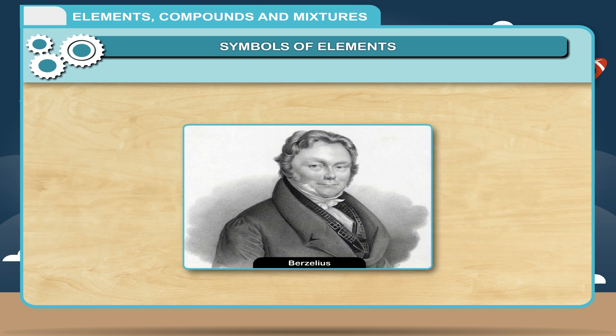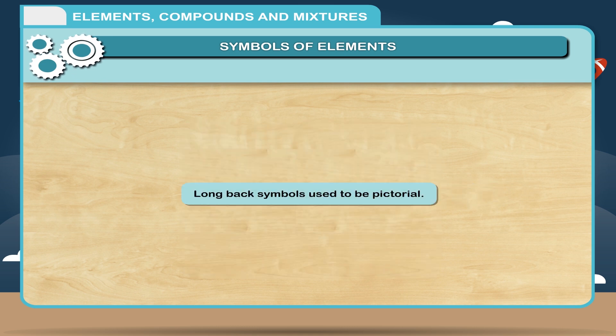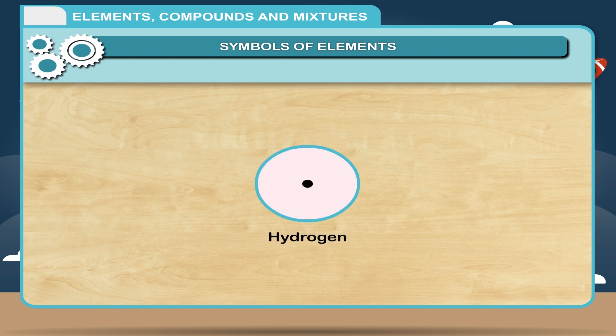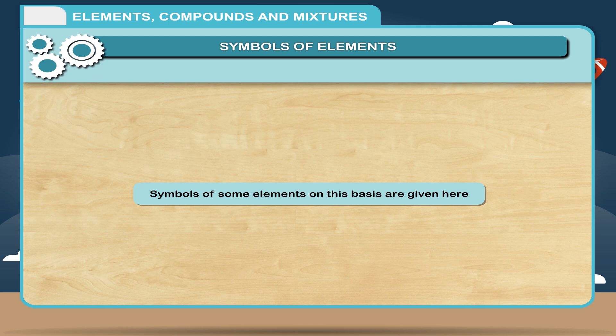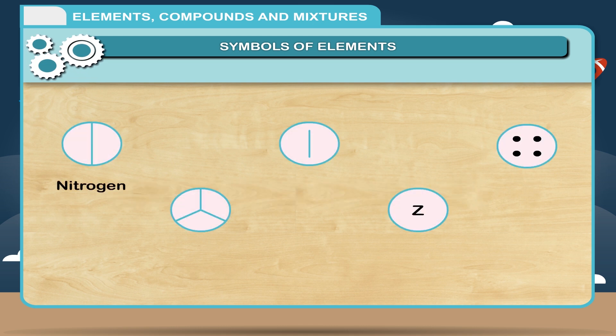Berzelius did pioneering work in this field and today we name elements adopting his method. Long back symbols used to be pictorial. To represent hydrogen one wrote... and for oxygen... symbols of some elements on this basis are given here: nitrogen, phosphorus, iron, zinc, mercury.